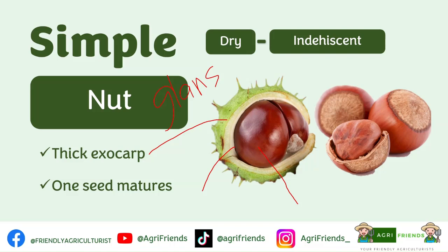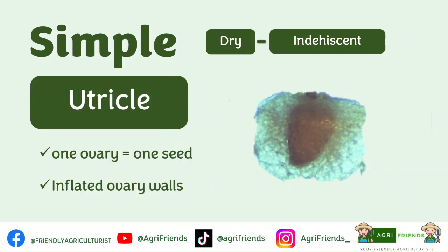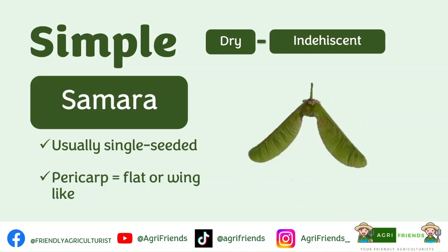We also have the nutlet, which is a small version of a nut. Next is the utricle — a one-seeded fruit formed from one flower having a single ovary. The ovary wall of this fruit becomes more or less bladdery or inflated at maturity. An example is Wolffia or the watermeal, the smallest fruits. Samara is usually a one- or two-seeded fruit with wings. The wings are part of the pericarp that grow out into a fibrous, paper-like outgrowth, and their function is seed dispersal. An example is the maple fruit.